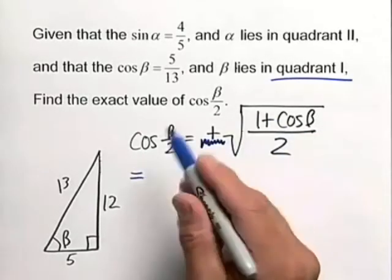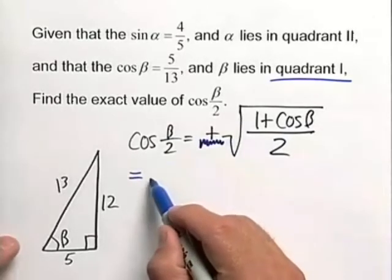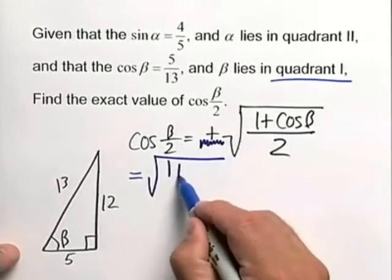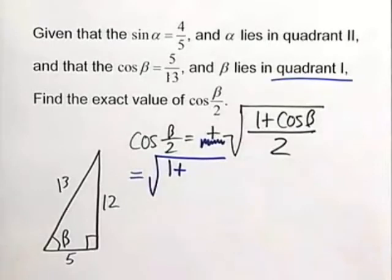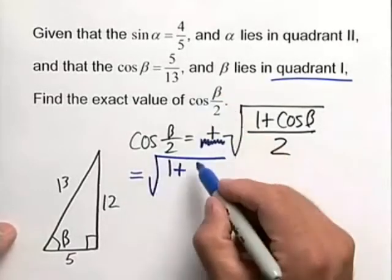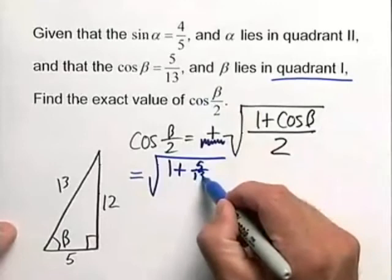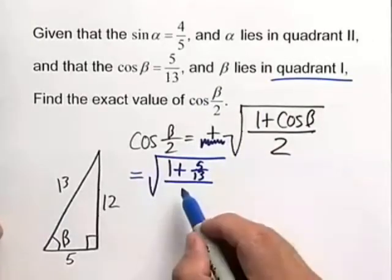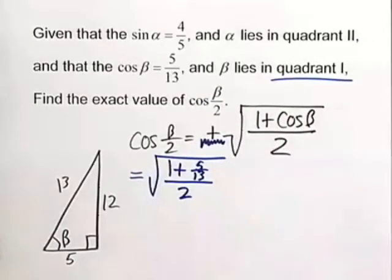So from this, cos(β/2) = √(1 + cos β). We know cos β is given as 5/13, and for that matter, you didn't really need the triangle, but it's nice to have. All over 2.